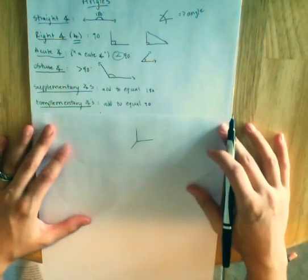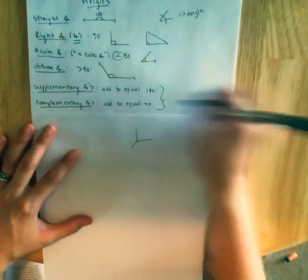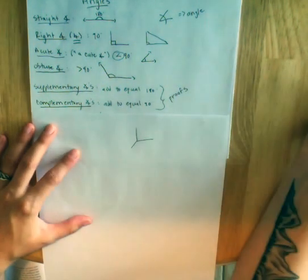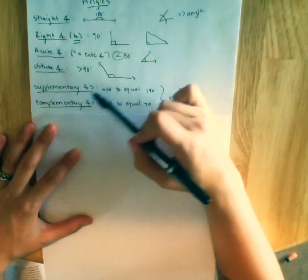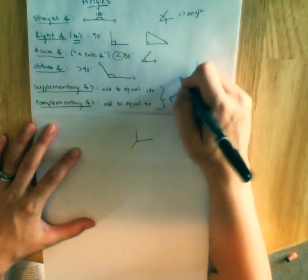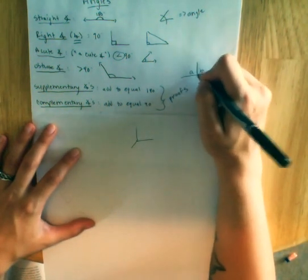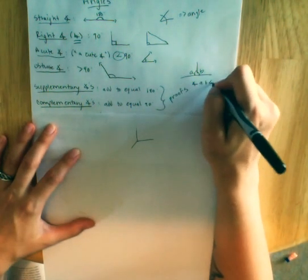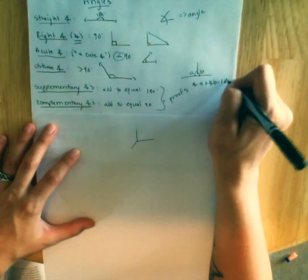Then we have our two pairs. You do need to know these definitions. We will use this a lot when we do proofs. Supplementary angles, they add up to equal 180. For example, this was angle A and this was angle B. Angle A plus angle B equals 180.